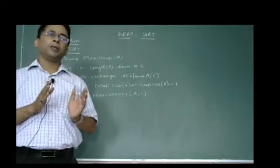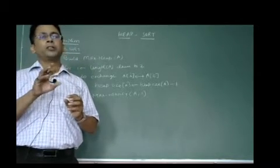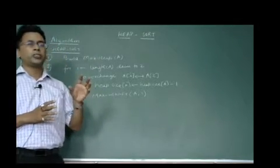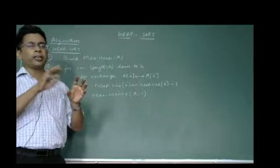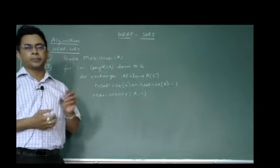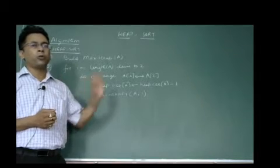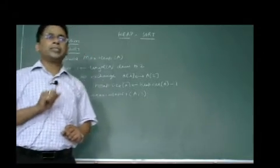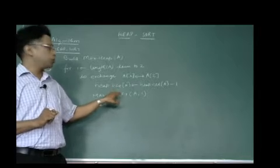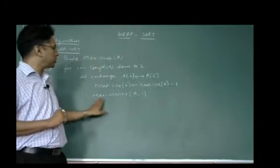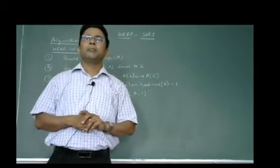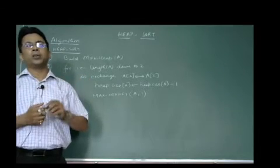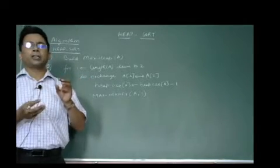A heap is a binary tree which can be a max heap or a min heap. Generally we consider it as a max heap, in which the parent node value is greater than the value of its children. This must be satisfied throughout the tree. The build max heap and max heapify functions ensure that at each node this property — that parent value is greater than child node value — is maintained.